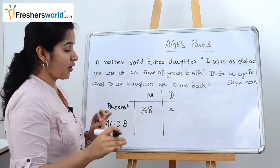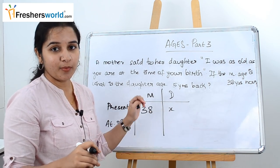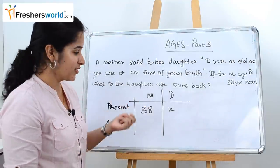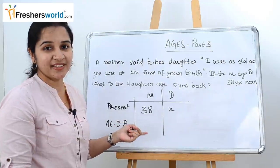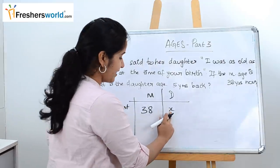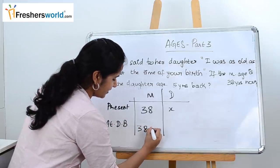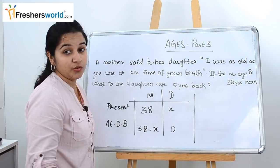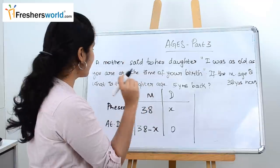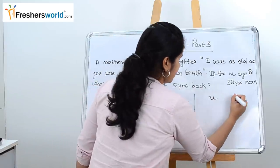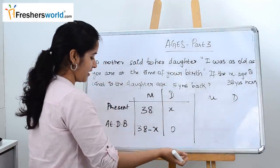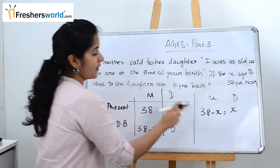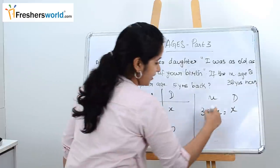At the time of the daughter's birth, the mother said she was as old as the daughter is now. So at birth, the mother's age was 38 minus x (since x years have passed since the daughter was born). The daughter's age at her own birth is obviously zero. The equation from the statement 'I was as old as you are at the time of your birth' is: 38 minus x equals x.